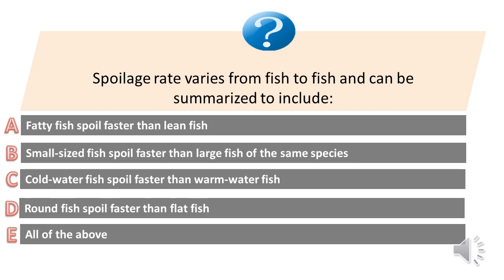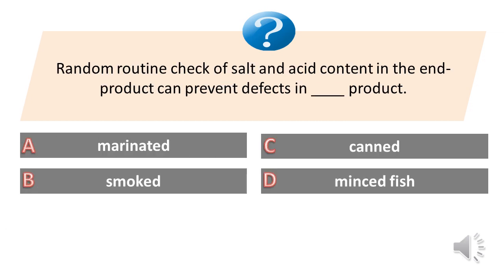Random routine check of salt and acid content in the end product can prevent defects in what product? A. Marinated. B. Smoked. C. Canned. D. Minced fish. Answer is A. Marinated.